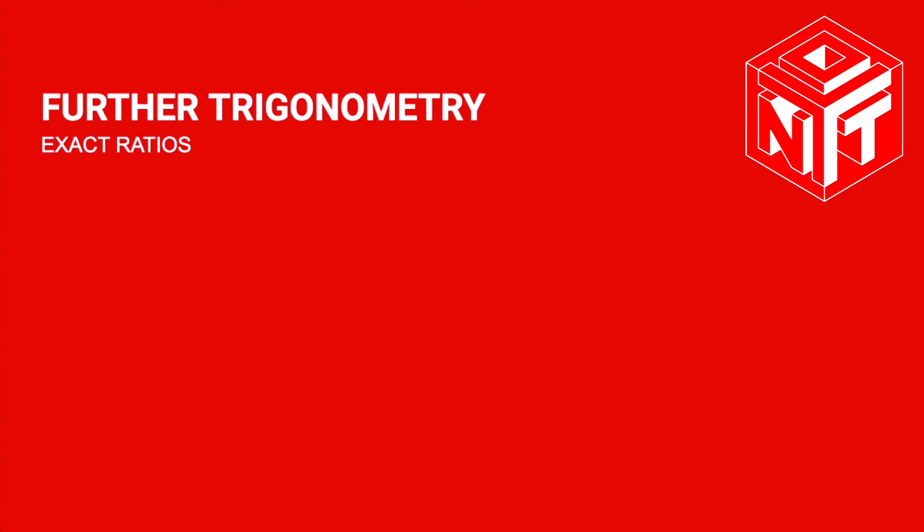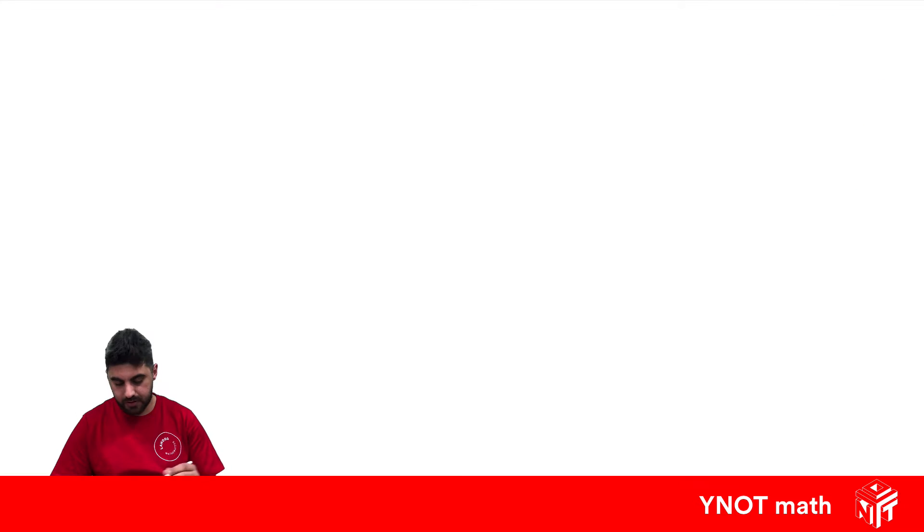Exact ratios. In trigonometry, we can look at two special triangles to give us some exact ratios that are going to be very useful later on.